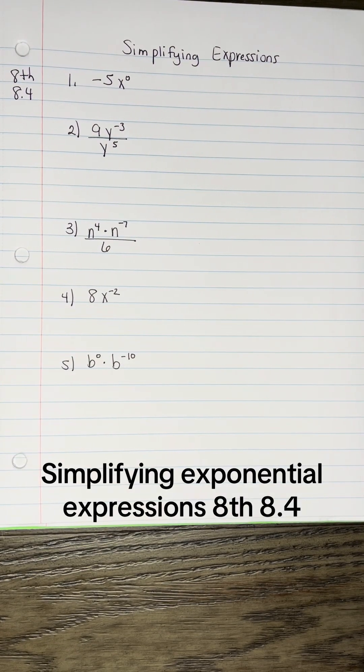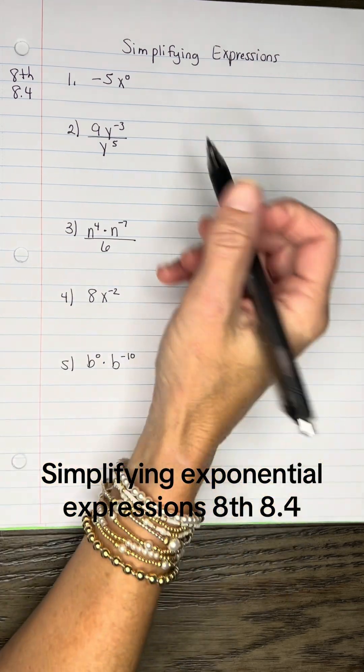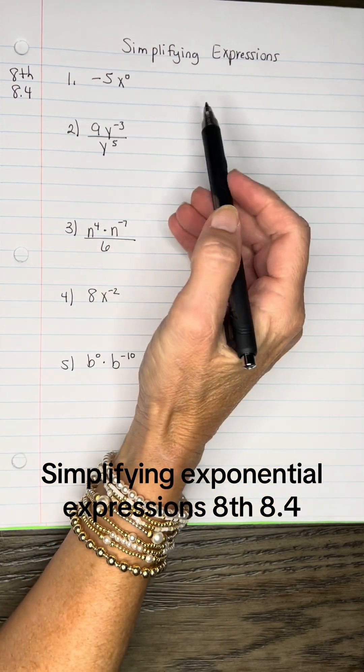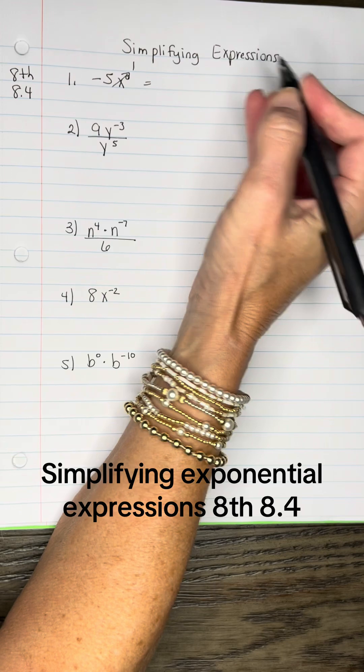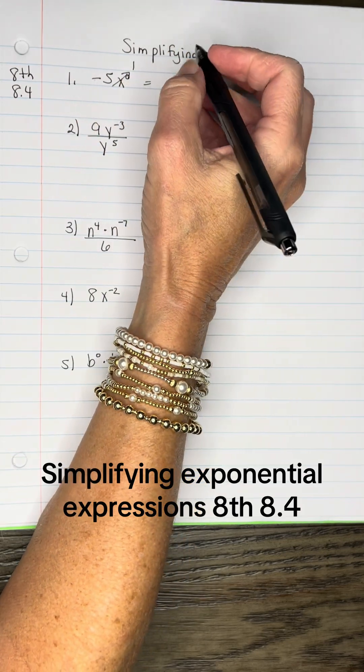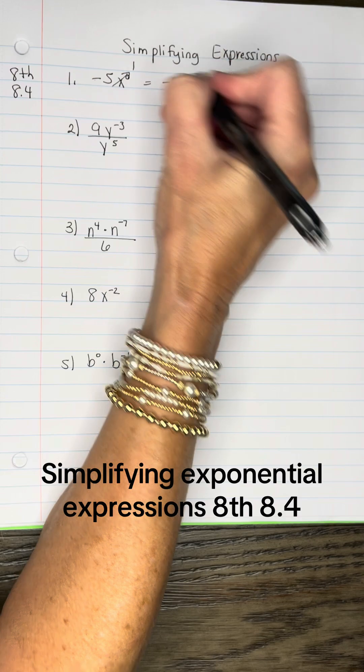Let's simplify some more expressions. We have negative 5X to the 0. Anything raised to the 0 turns into a 1. So I have negative 5 multiplied by 1, which is just going to be negative 5.